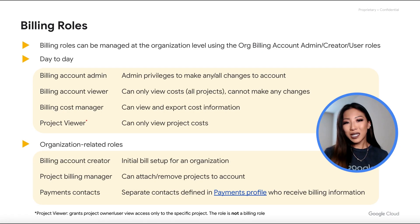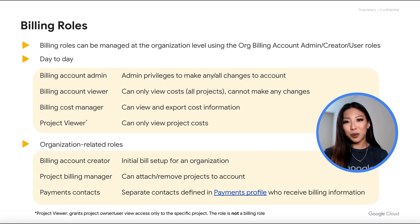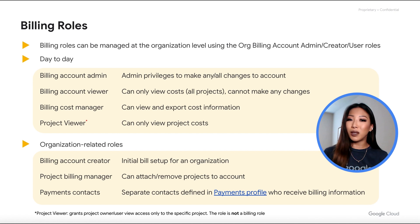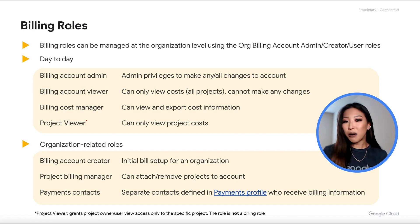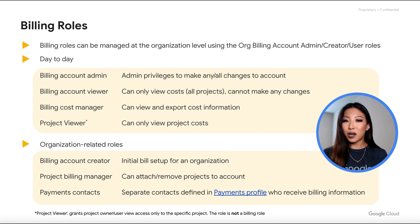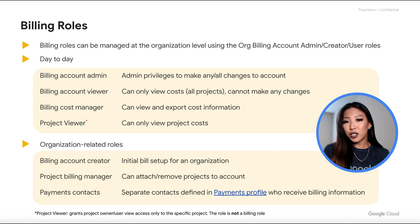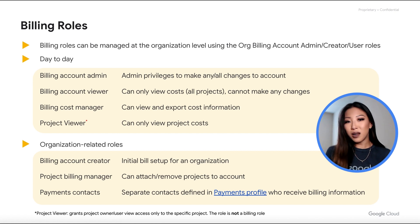In order to connect a project to a billing account, you need to have the correct permissions granted on both the project and billing account levels. The minimum roles required include billing account user on the billing account and project billing manager on the project or resource associated. Higher permissions such as project owner will work as well, but are unnecessary due to least privilege design.